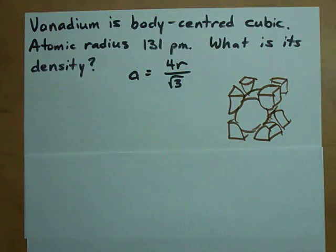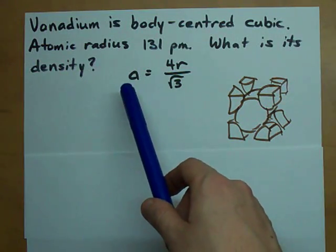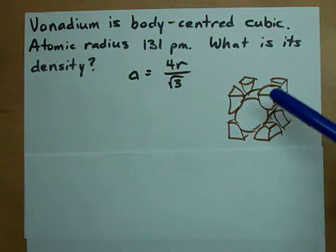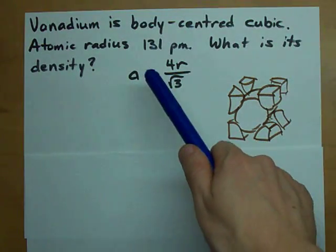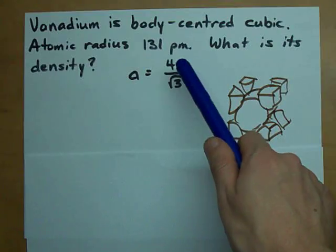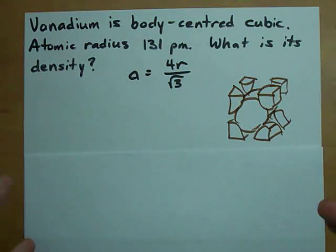Now it's important to note that they also give you that the edge length of the unit cell, or the length of one side of this cube, is 4 times the atomic radius divided by the square root of 3.